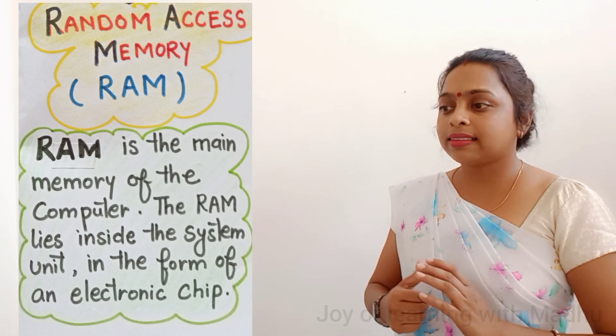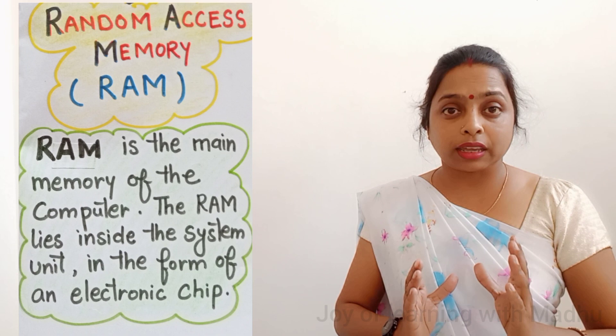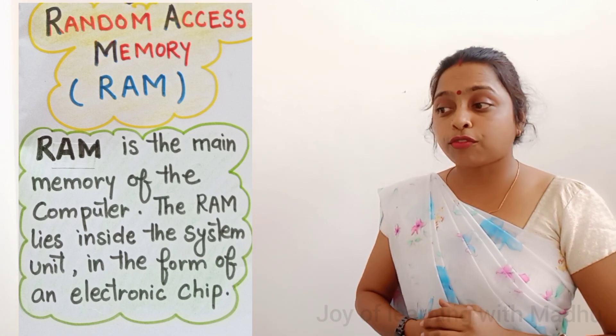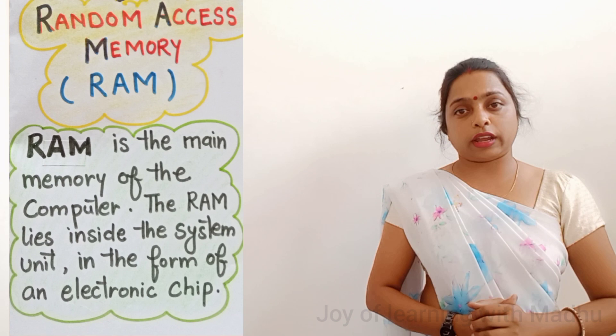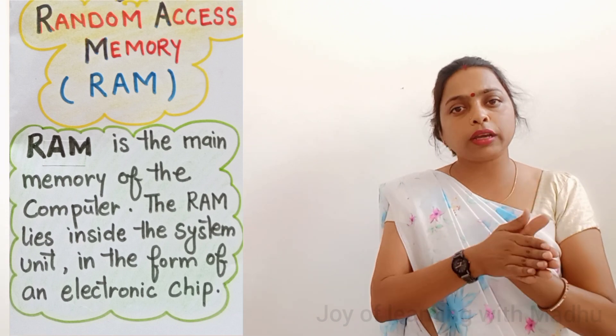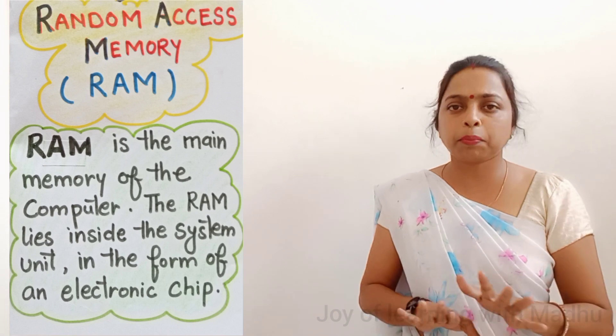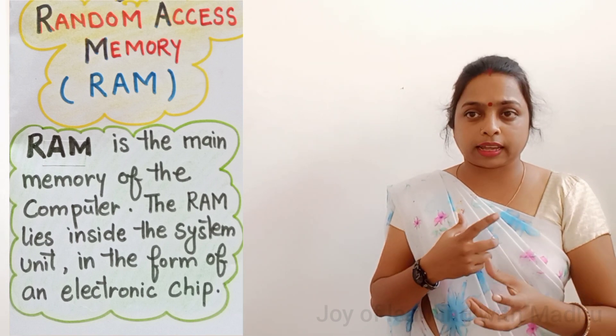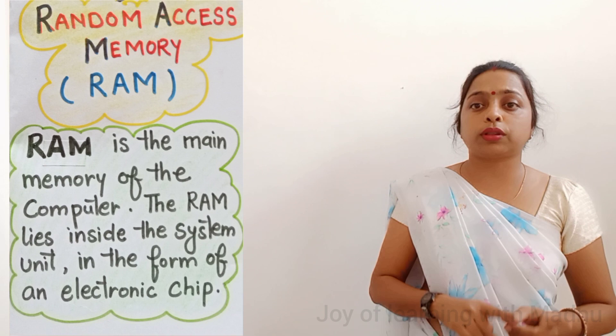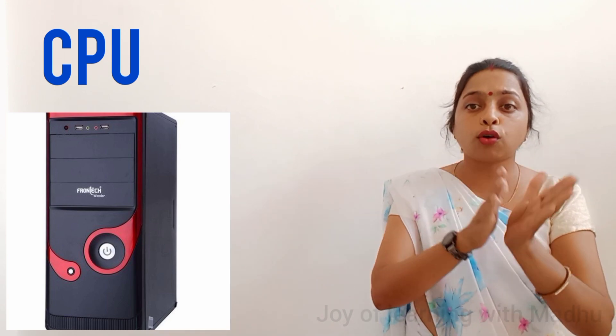RAM lies inside the system unit in the form of an electronic chip. Look here — this is the electronic chip. The CPU uses RAM to temporarily store input. It is not permanent — whatever we input is processed and output at that time. RAM can transfer data to the CPU at a high speed.